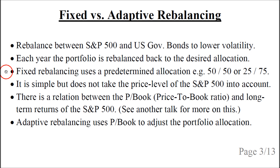In fixed rebalancing, we use a predetermined allocation, for example 50-50 or 25-75. This would mean that we have 25% invested in the S&P 500 and 75% invested in US government bonds. Then after a year, we rebalance so we have the same allocation. This is very simple to do, but it does not take the price level of the S&P 500 into account.